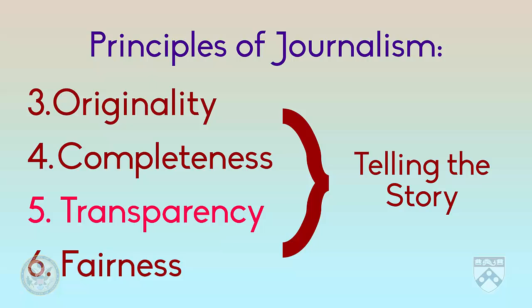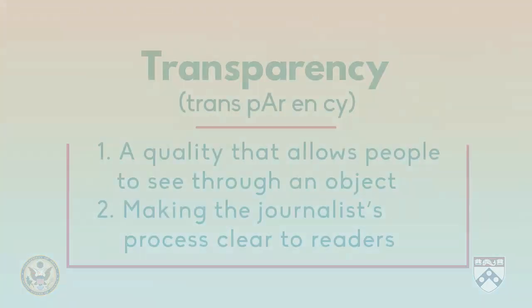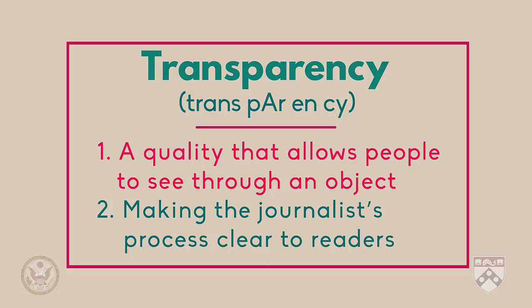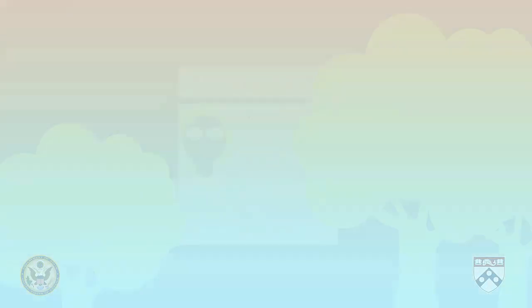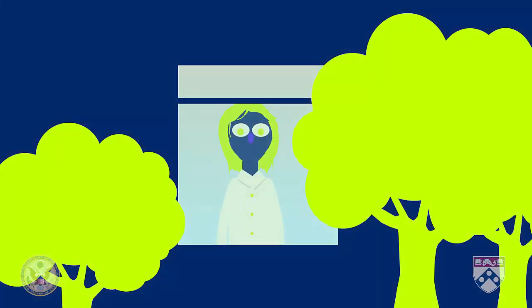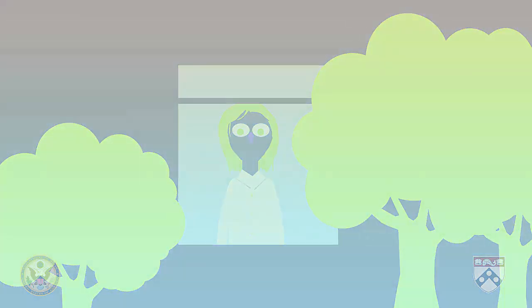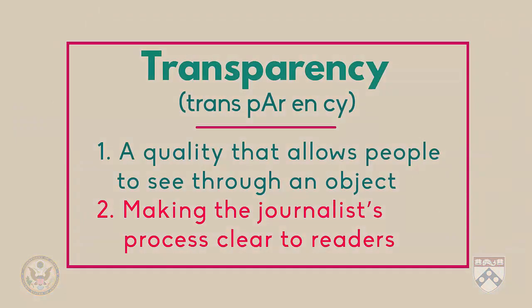The third principle that we're talking about in this video is transparency. This is a word that we normally use to describe something that you can see through, like a glass window. When we use it to talk about journalism, we mean that the people have the opportunity to look at the process that the journalist goes through when they write their article.